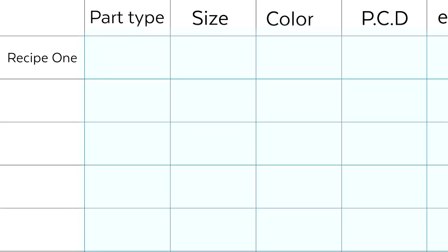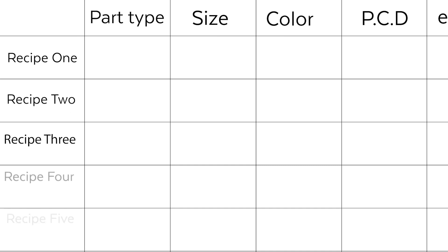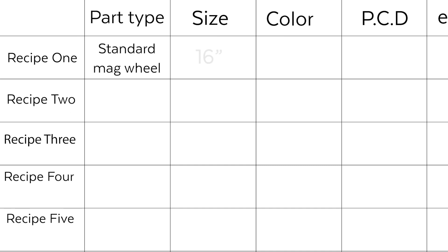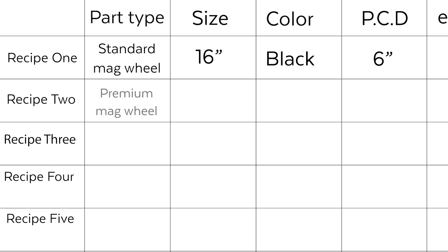Maybe you'll have 10 more rows because you're making 10 different wheel types. The parameters going across might be: standard mag wheel, 16 inch, black, etc. The next row is premium mag wheel, 19 inch, gray, etc.